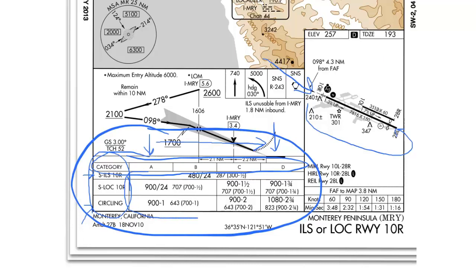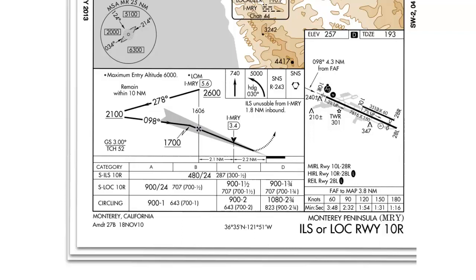Finally, you have your decision heights or minimum descent altitudes and minimum visibility for the approach. Now let's look at these sections in detail. The category data is specific to your aircraft and your approach speed being flown. The category of approach is specific to the type of approach plate that you're looking at. An ILS approach will always have the straight-in ILS value. If you can fly the localizer, it will always have the localizer value. And if there's a circling approach, it will always have the circling value. We'll look at a few different types of approach plates later, but this is the basic type of approach.